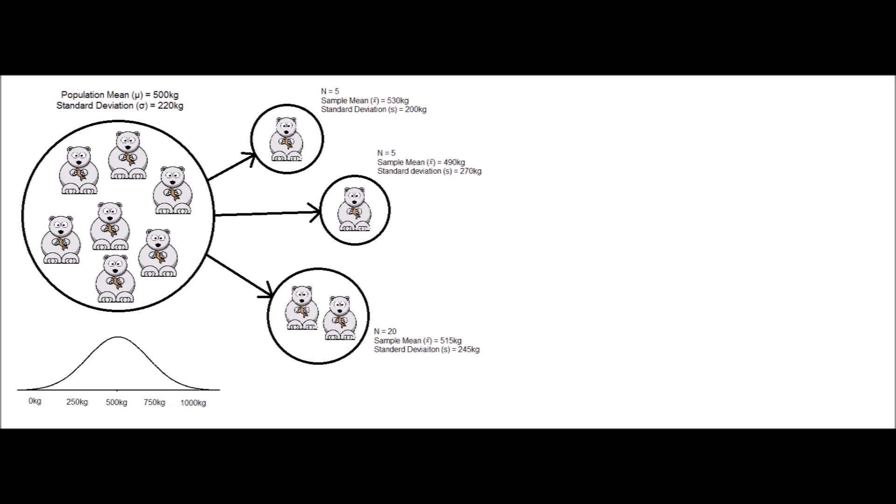Why then are we more confident about our estimate of the population mean when we weigh more bears? Consider this. What if we could take all possible samples of size 5 from the population, calculate the sample means, and plot them on a probability distribution? What would that look like?